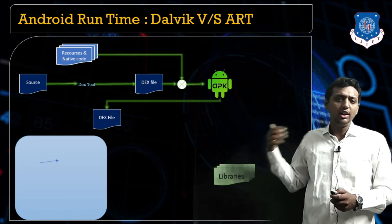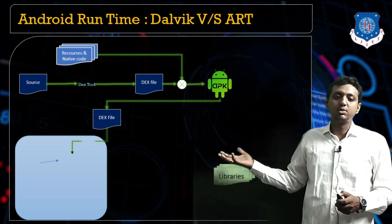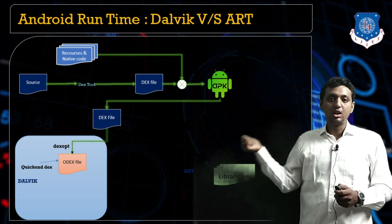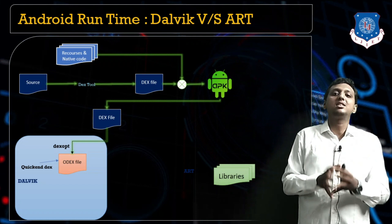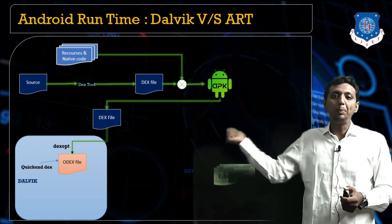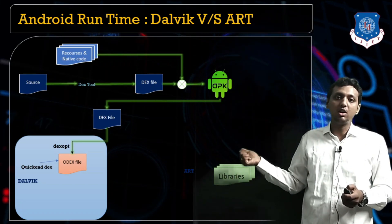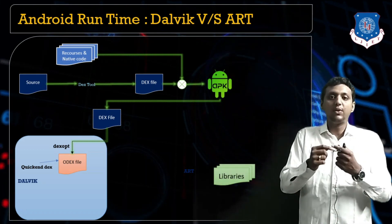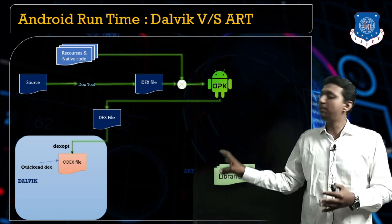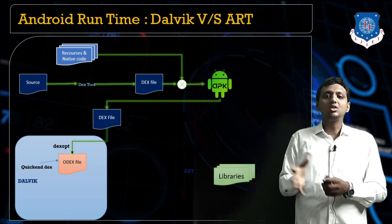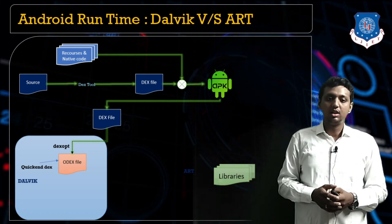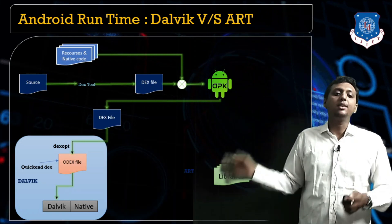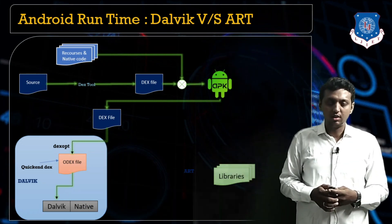Here is how DVM works: the .dex file first goes through the ODEX process. The .dex file is converted into an optimized .dex file by the dexopt tool, also known as a Quickened .dex file, which is installed on the Android OS. Then the Dalvik machine converts the .dex file to ODEX format, calls native libraries, and the application runs successfully.